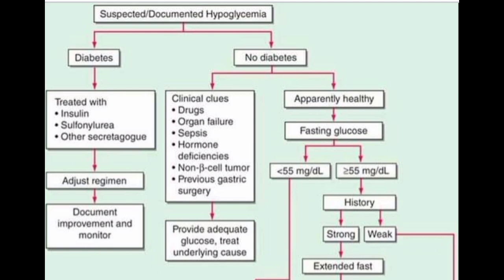If the patient is healthy with no underlying cause and is non-diabetic, we check the fasting glucose. If the fasting glucose is less than 55 milligrams per deciliter, the next steps are shown in the next algorithm, which I will discuss in the next picture.